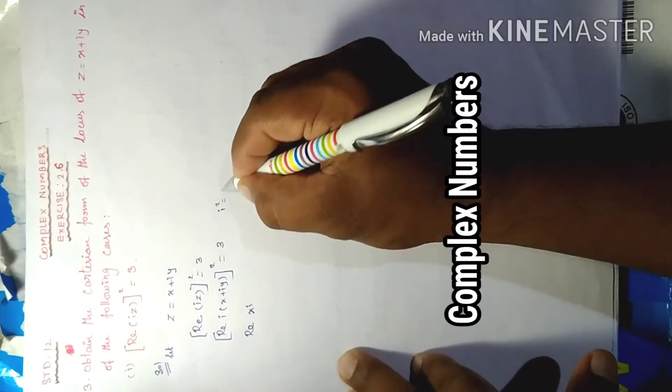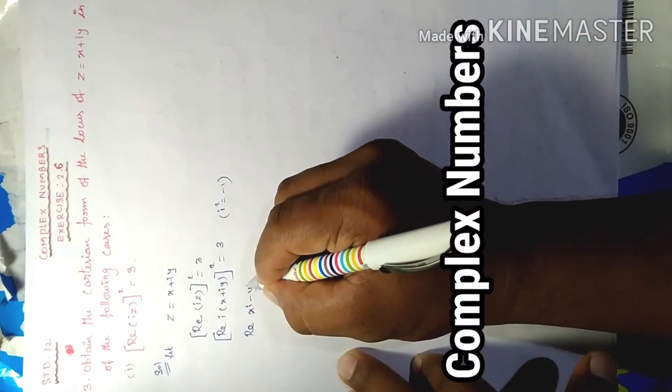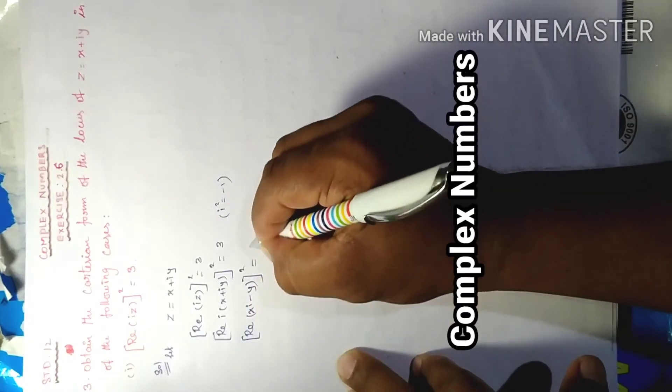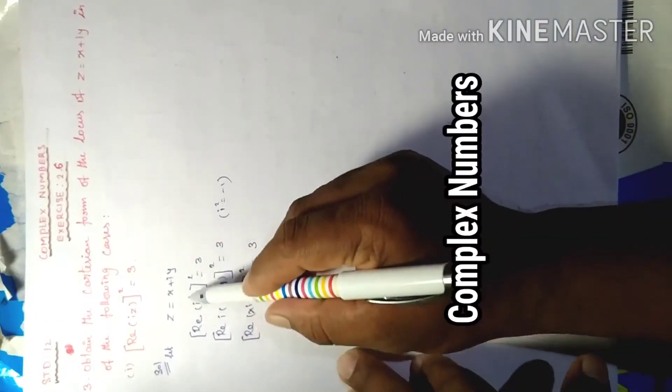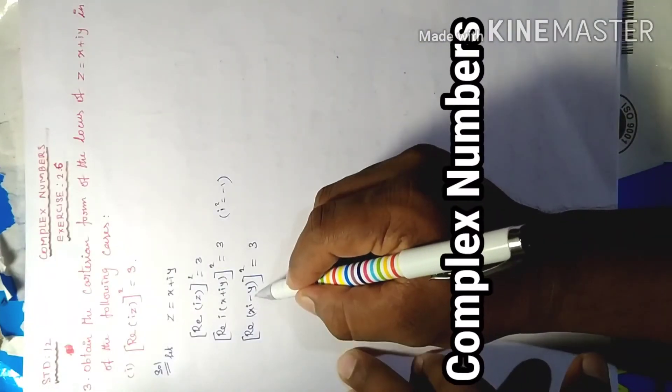i square value equal to minus 1, therefore minus y. Whole square equal to 3. In the question we have real part of the value, not imaginary i.